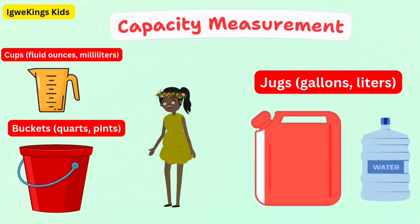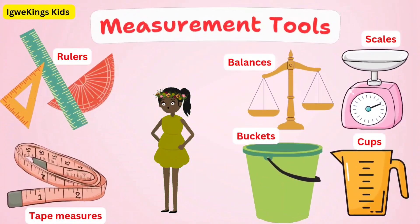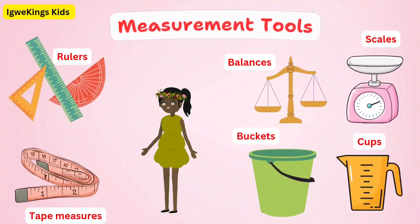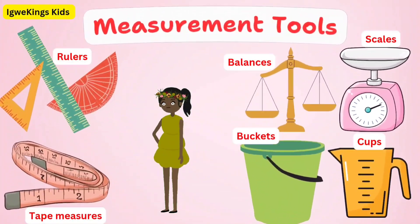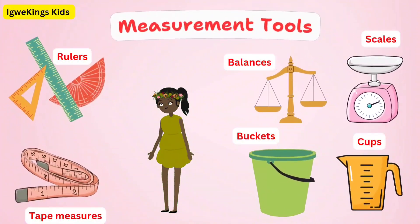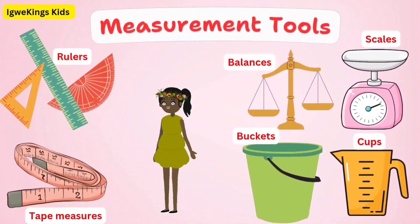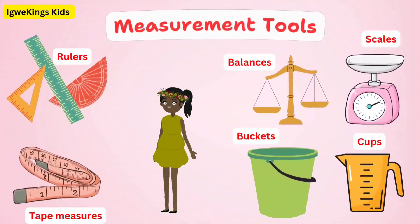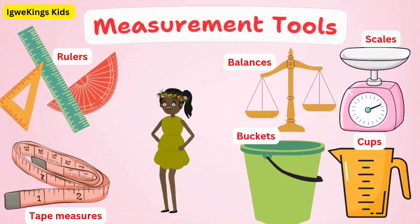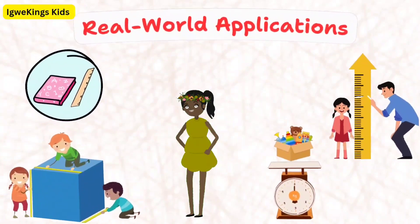Which unit do you think is best for measuring this water bottle? Now let's explore some measurement tools. Can you show me how to use a ruler, a scale, or a measuring cup? Some common measurement tools include: rulers, tape measures, scales, balances, cups, jugs, and buckets. These tools help us measure length, weight, and capacities accurately.